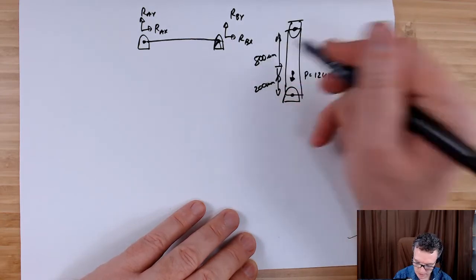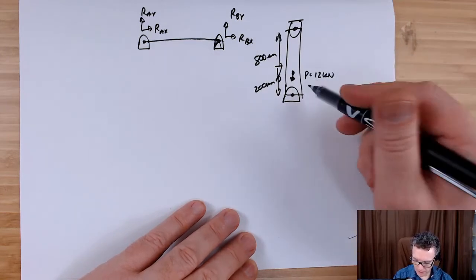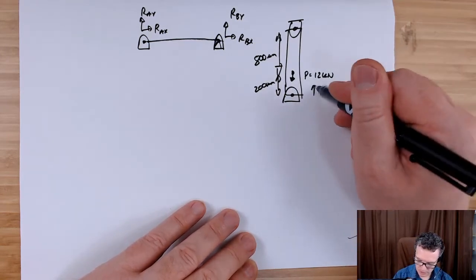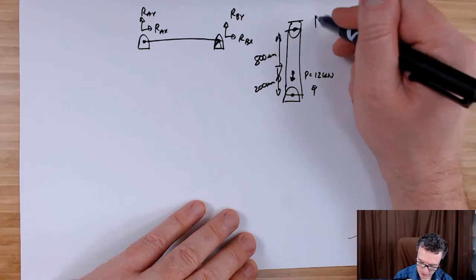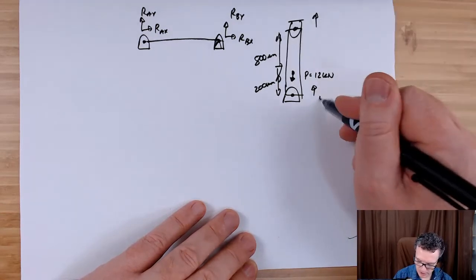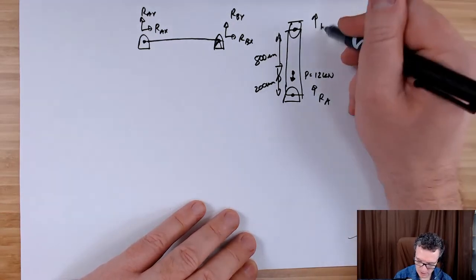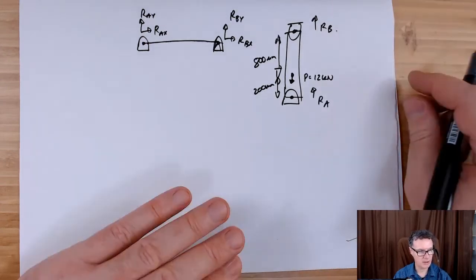We'll call that load P, 12 kilonewtons, and this is a one meter long bar. So we'll have 200 millimeters there, 800 millimeters there, and I will label this up. We'll just have reactions at this point here, so that'd be my Ra and that'd be my Rb.